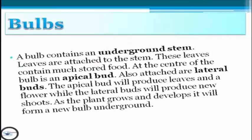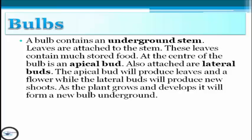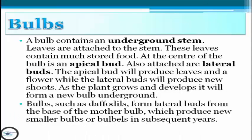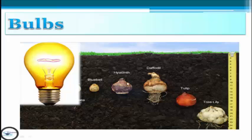The fourth example is bulbs. A bulb contains an underground stem. Leaves are attached to the stem and these leaves contain much stored food. At the center of the bulb is the apical bud. Also attached are lateral buds. The apical bud will produce leaves and a flower while the lateral buds will produce new shoots. As the plant grows and develops, it will form a new bulb underground. Bulbs such as daffodils form lateral buds from the base of the mother bulb which produce new smaller bulbs in subsequent years. As you can see in the picture, these are examples of bulbs' vegetative propagation.